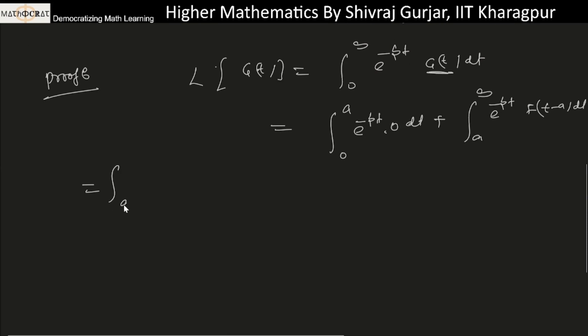From a to infinity, e^(-pt) f(t-a) dt. Let's say t-a equals z, so dt will be dz. When t is a, then z will be 0, and when t is infinity, z is infinity. e^(-p) times t can be replaced by z plus a.